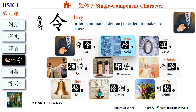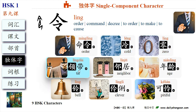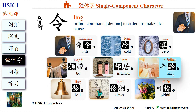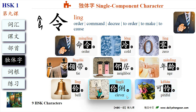For example, characters derived from 令 include: 冷, 灵, 领 (as in 领带), 邻 (as in 邻居), 龄 (as in 年龄), 怜 (as in 可怜), 灵力.